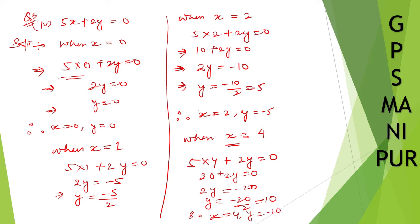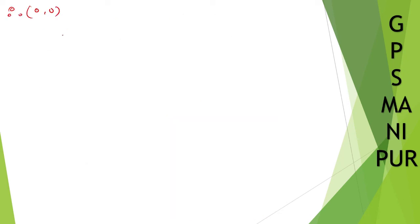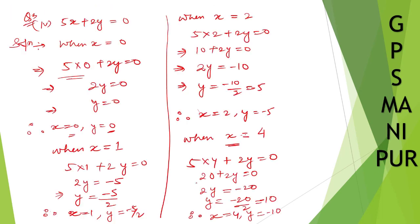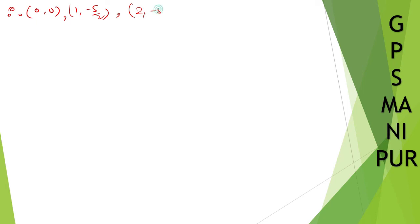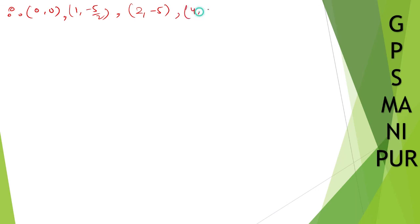So I can write down the solutions: when x is 0, y is 0; when x is 1, y is minus 5 by 2; when x is 2, y is minus 5; and when x is 4, y is minus 10.